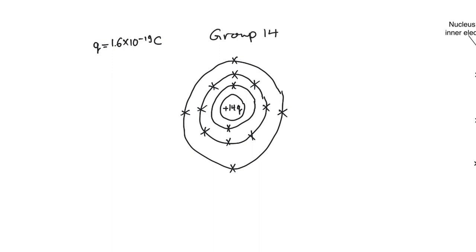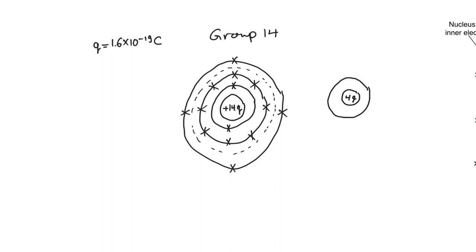Everything interesting in silicon happens in the final orbit because it is the chemically unstable orbit. Everything inside this dotted line — the nucleus and the first two orbits — is stable and stays that way. Inside the dotted line we have a net charge of plus 4q: that's the 14q from the nucleus minus 10q from the first two orbitals, plus the final orbit with four electrons. The representation on the right is simply a shorthand for the silicon atom.